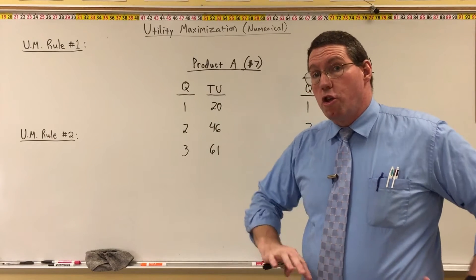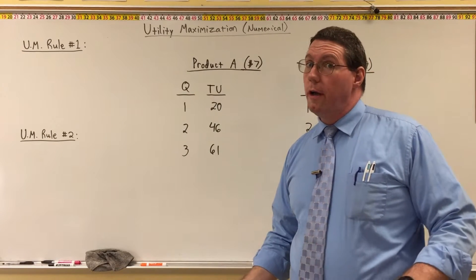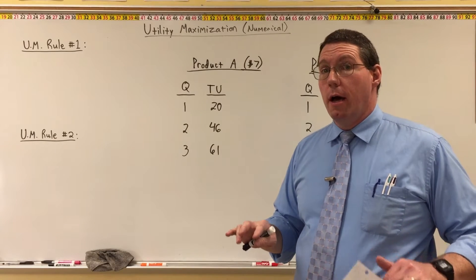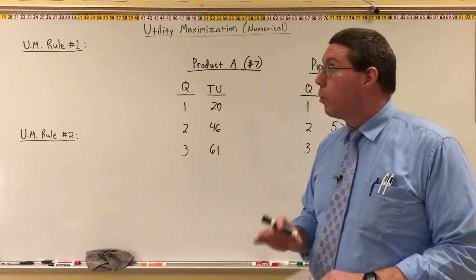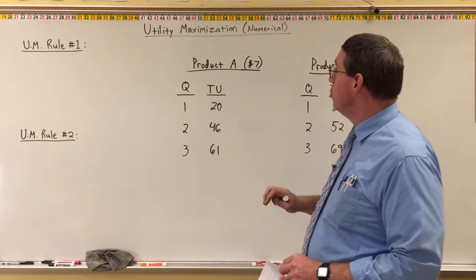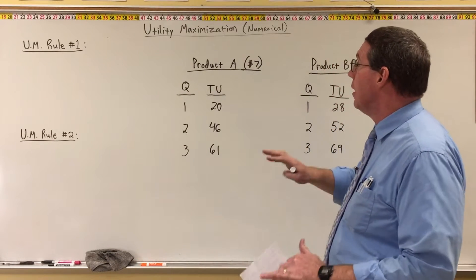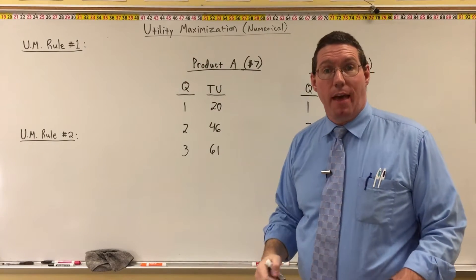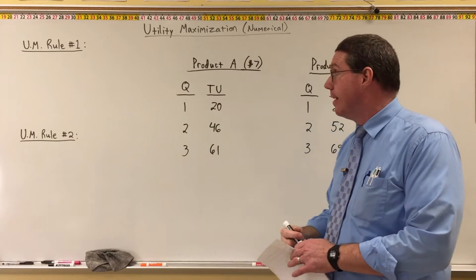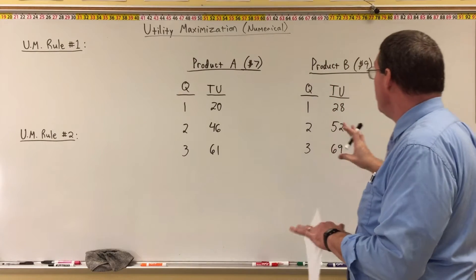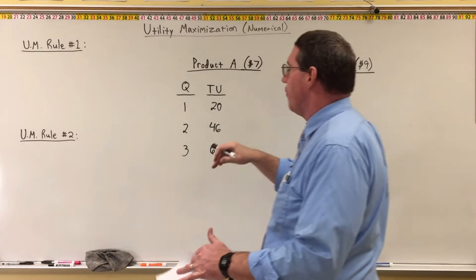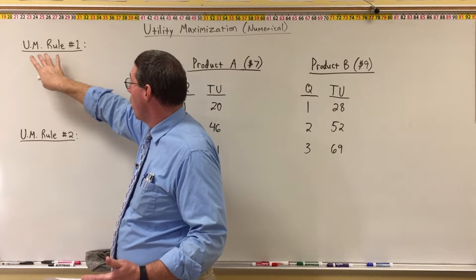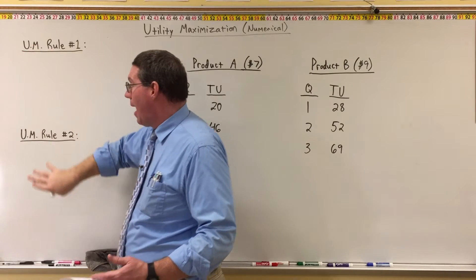Alright folks, now let's use what we just learned about total utility, marginal utility, average utility, and marginal utility per price. We're going to use that to help people get the most utility out of whatever income they have, whatever their budget constraint is. In order to do this numerically, we need a couple of things which we call the utility maximization rules.